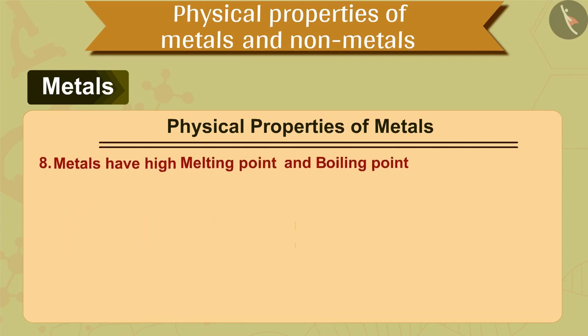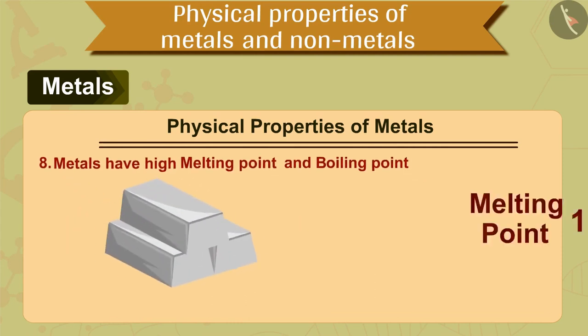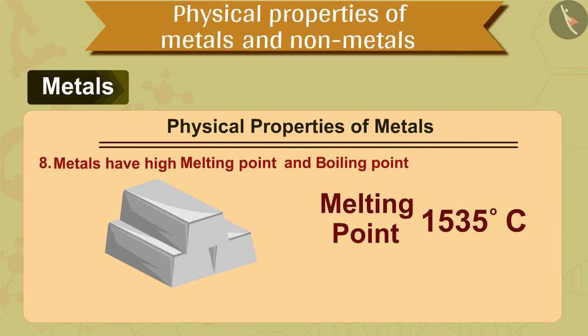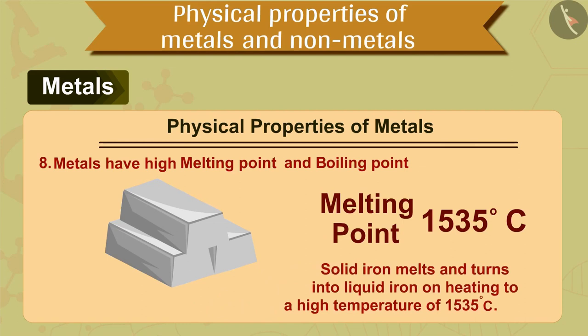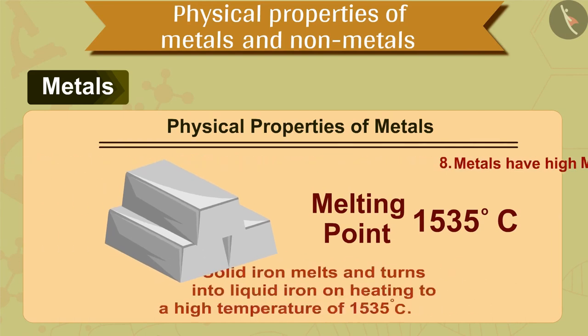For example, iron metal has a high melting point of 1535 degrees Celsius. This means that solid iron melts and turns into liquid iron on heating to a high temperature of 1535 degrees Celsius.